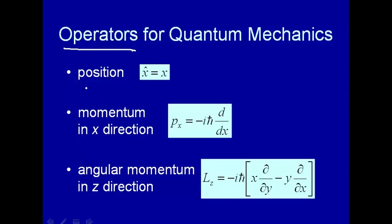One is the position operator, one is momentum in the x-direction, and one is angular momentum. Now, things like position x — the operator there means just multiply by x. So things that are static, like x, you multiply by x. So any potential we might have, say a 1/r potential, means the operator corresponding to that potential will just multiply by 1/r.